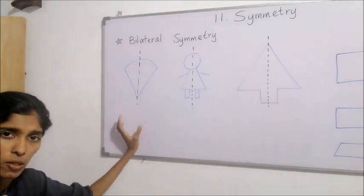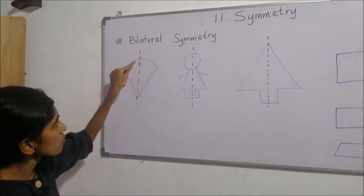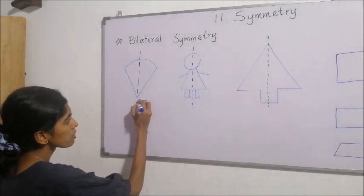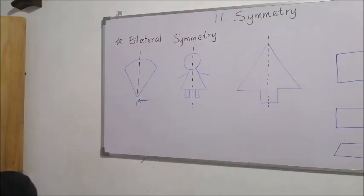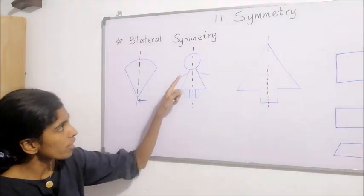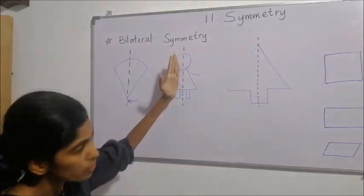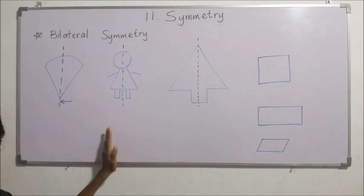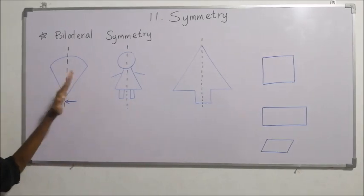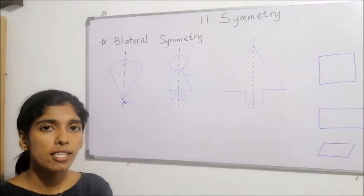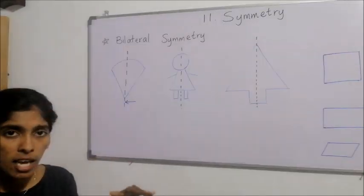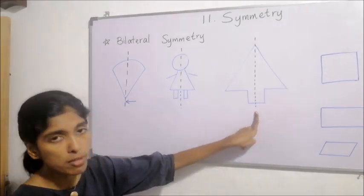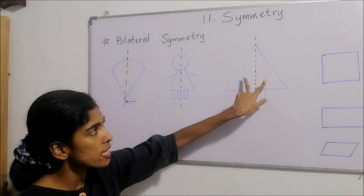Such a figure is called a bilateral symmetric plane figure. The straight line used to fold the figure is called the axis of symmetry. In these two figures, I have shown you the axis of symmetry. For this figure, only one axis of symmetry exists. On either side of this axis, the two parts are equal in shape, size, and area.